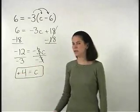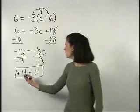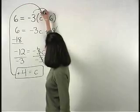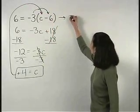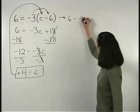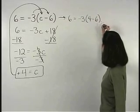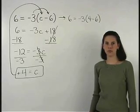So positive 4 equals c. If we check our answer by plugging 4 back in for c in the original problem, we have 6 equals negative 3 times 4 minus 6. Since 4 minus 6 is negative 2,